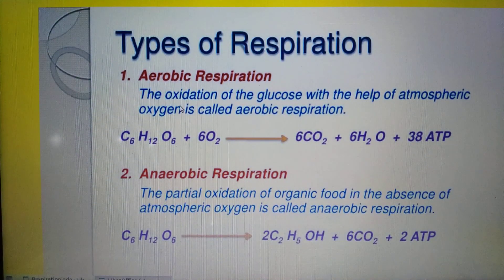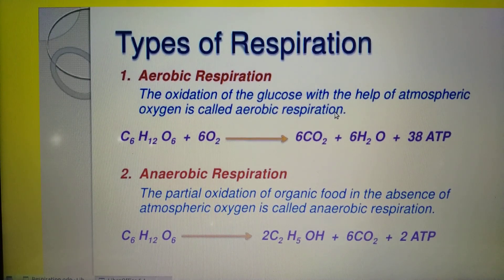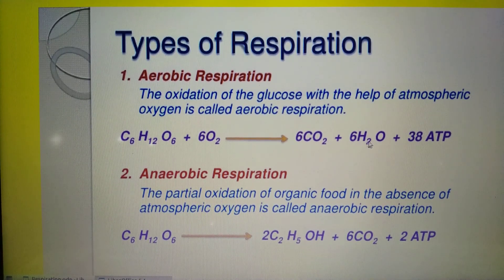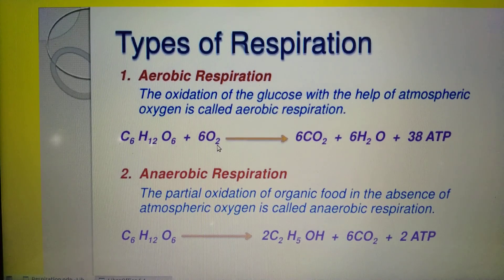What is aerobic respiration? The oxidation of glucose with the help of atmospheric oxygen is called aerobic respiration. Aerobic respiration occurs in most organisms including humans. The chemical equation for aerobic respiration is: C6H12O6 + 6O2 → 6CO2 + 6H2O + energy, that is 38 ATP. The glucose undergoes oxidation to form carbon dioxide, water, and energy.